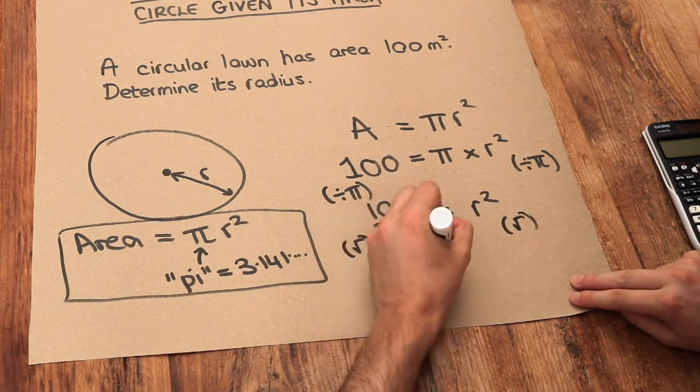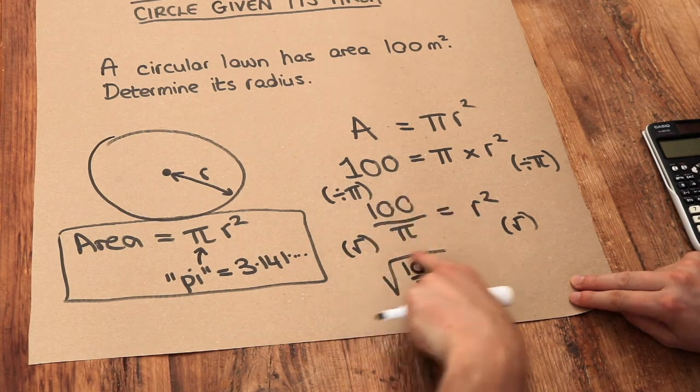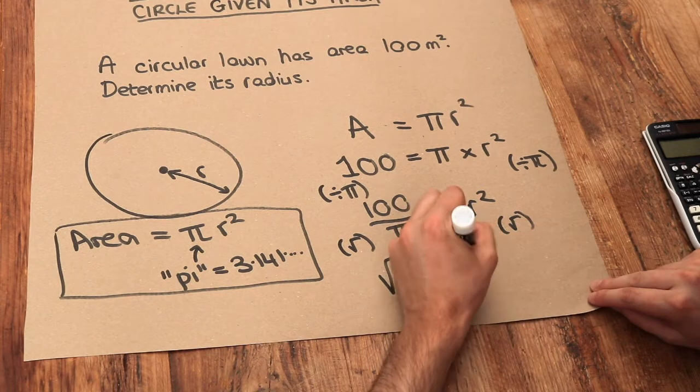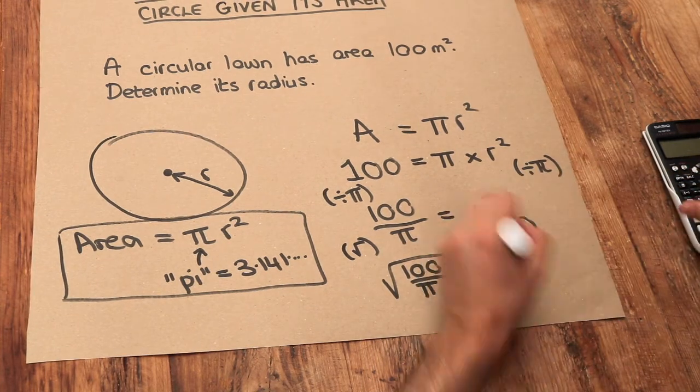That becomes the square root of all of 100 over pi. So make sure your square root goes over the whole fraction, not just the top. And the square root of r squared - well, the square rooting gets rid of the squared, leaving just r.